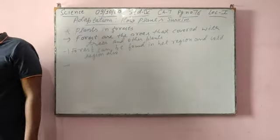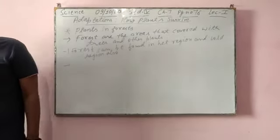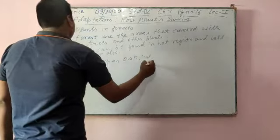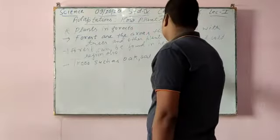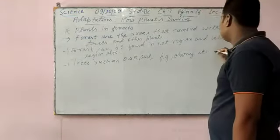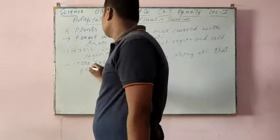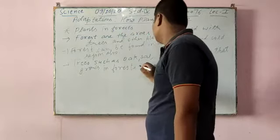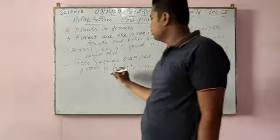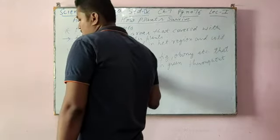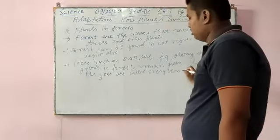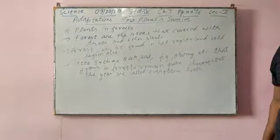Evergreen trees such as ebony, rubber, oak, sal, pine and spruce trees. Trees such as oak, sal, pine, ebony, etc. that grow in forests remain green throughout the year. So these trees are called evergreen trees. They have broad leaves also.